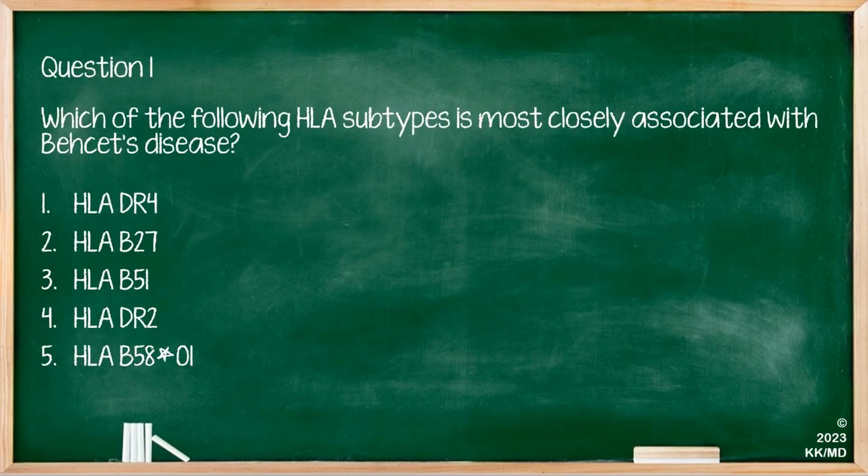Which HLA subtype is most closely associated with Behçet's disease? Options are HLA-DR4, HLA-B27, HLA-B51, HLA-DR2, and HLA-B5801. HLA-B51 is the correct answer — this is worth knowing particularly for the MCQ portions of MRCP.